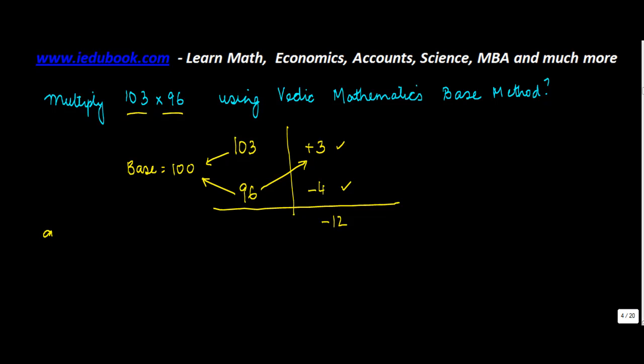So 96 plus 3 equals 99. Multiply this number with the base: 99 times 100 gives you 9900. This plus minus 12 will give you...